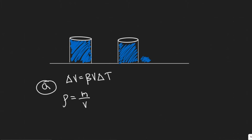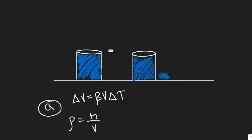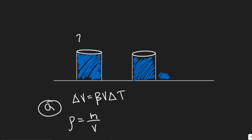In this problem we're given a bunch of information, but first let's understand what's going on. We have basically two points in the container. Initially we know the container is full of water to the brim at 20 degrees Celsius, and we know we're going to heat it to 60 degrees Celsius.